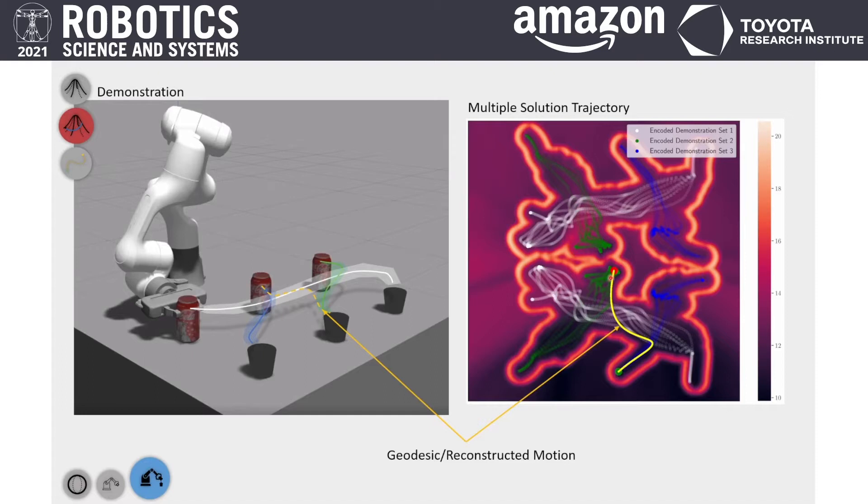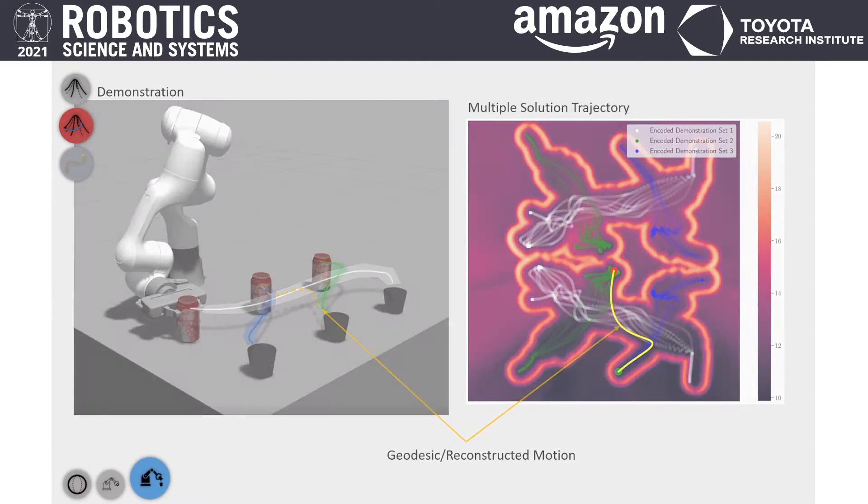And here we show you a multiple solution trajectory created from the synergy of all demonstrations. As you can see, the geodesic has used three different sets of demonstration to come up with a completely new trajectory that was not demonstrated to the robot beforehand.